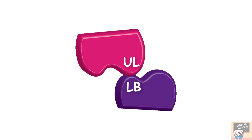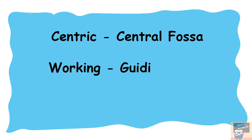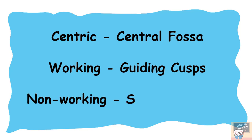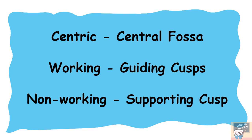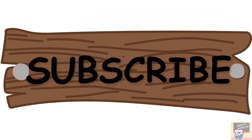To sum it up: in centric interference, reduce the central fossa. In working side interference, reduce the guiding cusps — upper buccal and lower lingual, i.e., BULL's law. In non-working contact, reduce one of the two supporting cusps — either the upper lingual or the lower buccal — which is the reverse BULL's law. I hope this video was helpful. If you find it helpful, please like, comment, share, and don't forget to subscribe. Thank you.